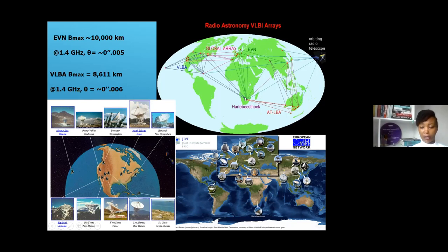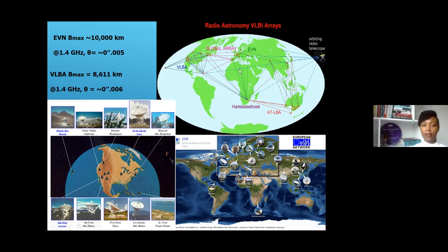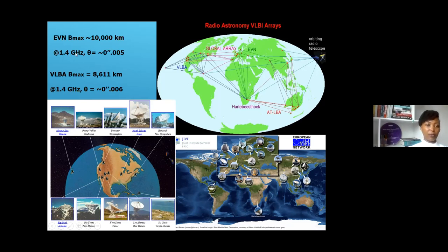Clearly, we only have one VLBI station in Africa — this is the Hartebeesthoek, a 25-meter dish at the Hartebeesthoek Radio Astronomy Observatory in South Africa, which provides long baselines to the EVN, the VLBA, and the LBA. The EVN has a maximum baseline of about 10,000 kilometers, providing very high angular resolutions at a frequency of about 1.4 gigahertz.